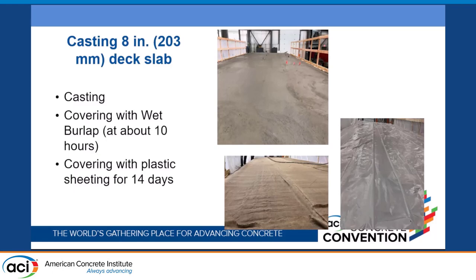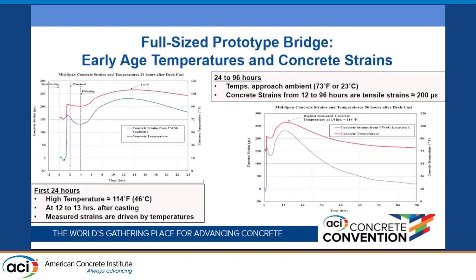We allowed the bridge to cure for about 14 days using wet burlap sacks and plastic sheets. Looking at short-term monitoring data: the first graph shows temperature versus concrete strains from the vibrating wire strain gauges. Due to heat of hydration, the concrete reached 114°F while ambient lab temperature was 73°F. The temperature strains from the vibrating wire gauges followed the same pattern — the concrete was heating up and expanding, and all that strain data followed the temperature profile.